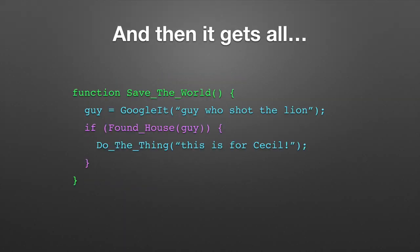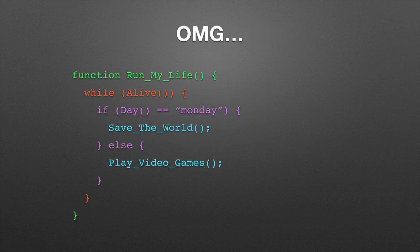'Do the thing' takes a message. Function 'save the world' — what are we doing here? It looks like we're finding the guy who shot the lion. And if we find his house, then we do the thing at his house and we yell, 'This is for Cecil.' So he's going to get a pie in the face. We have a pretty complicated program. Let's go deeper.